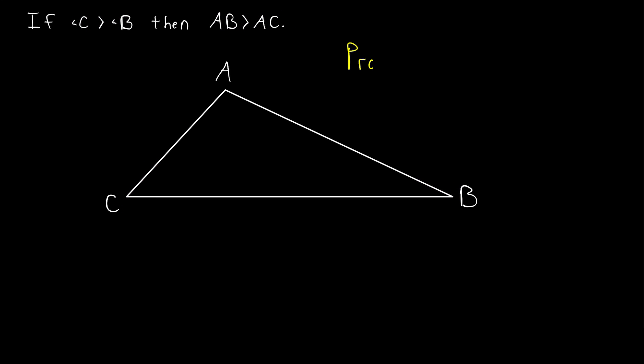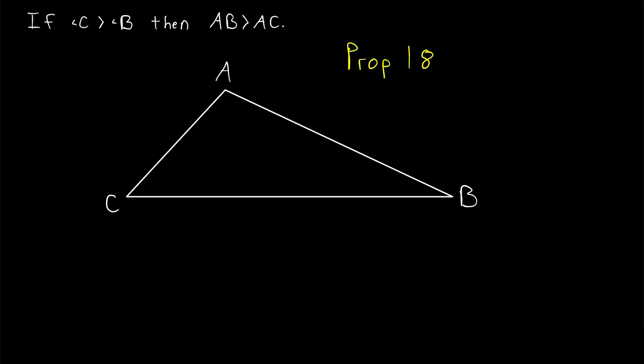This is Proposition 19 from Euclid's legendary geometry textbook, The Elements. Proposition 18 is the converse of this statement, which we proved in a previous lesson. In that lesson, we assumed that we had a side longer than another side and proved that the angle opposite the longer side is greater than the angle opposite the shorter side.